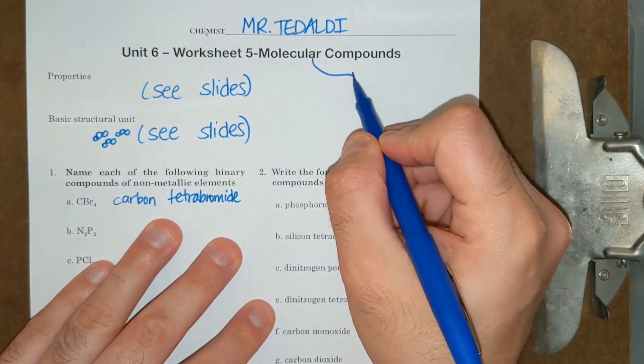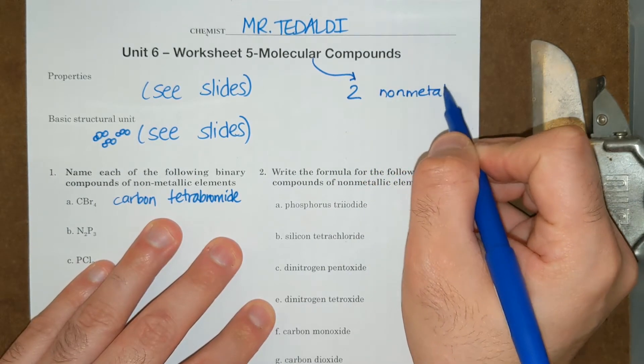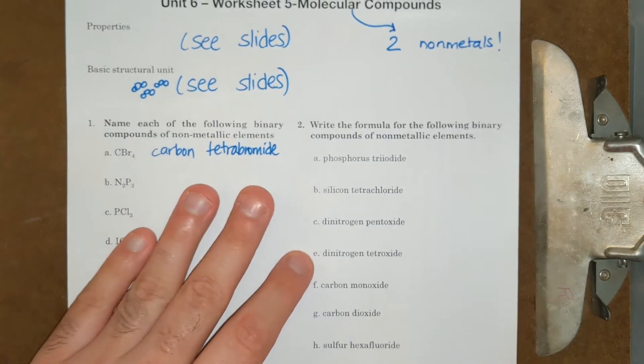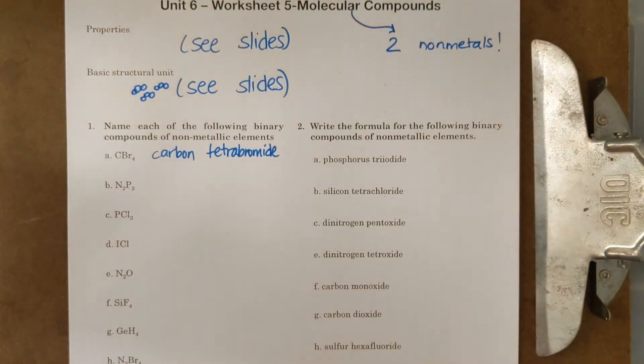And how do I know that I have molecular? Two non-metals. If I had three, probably polyatomic ion present, or I have to tell you. Four, probably polyatomic ion present. Okay, but if I have two, molecular.